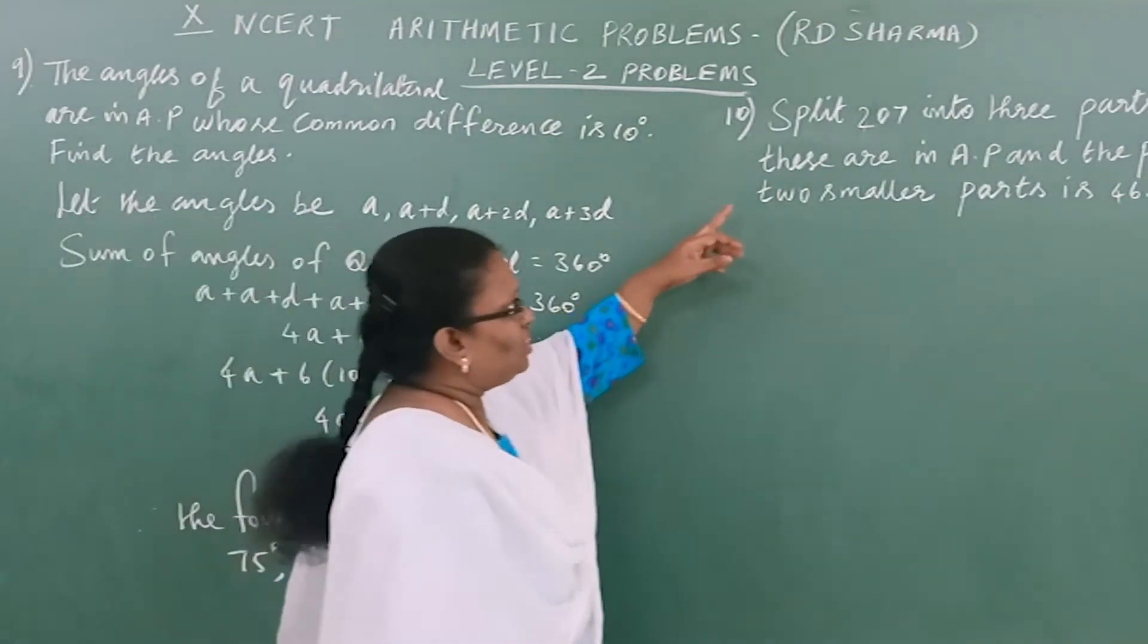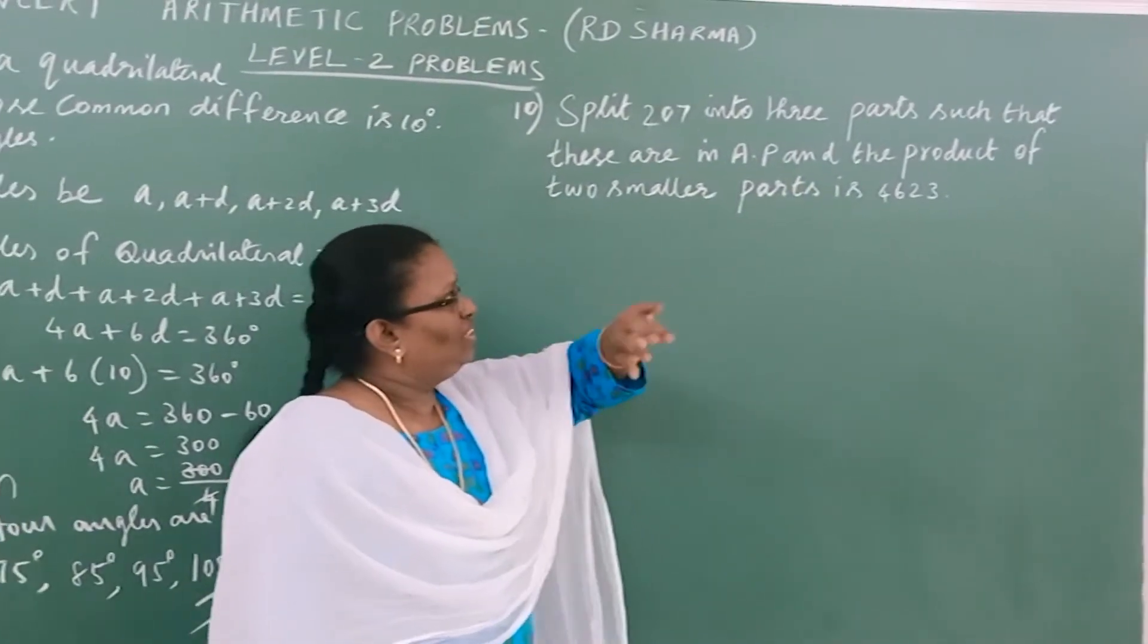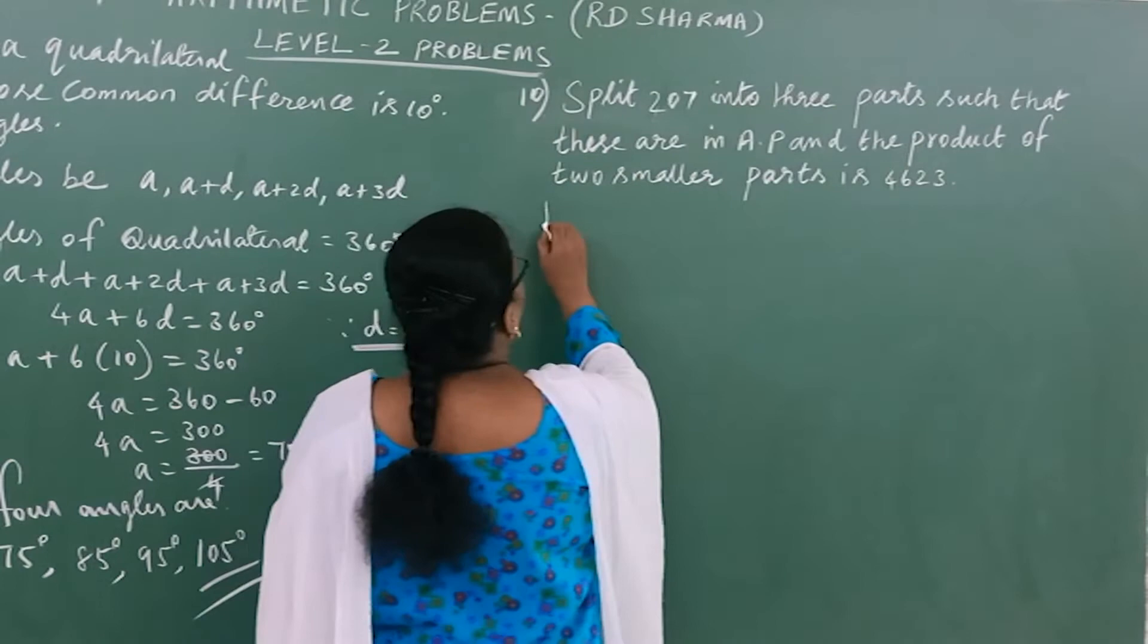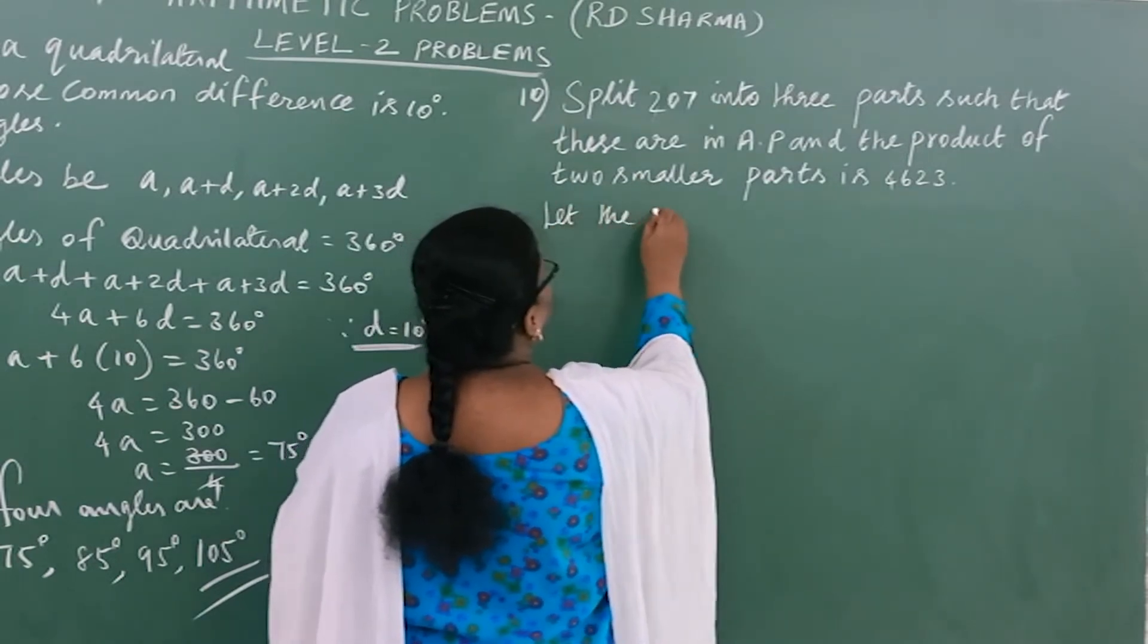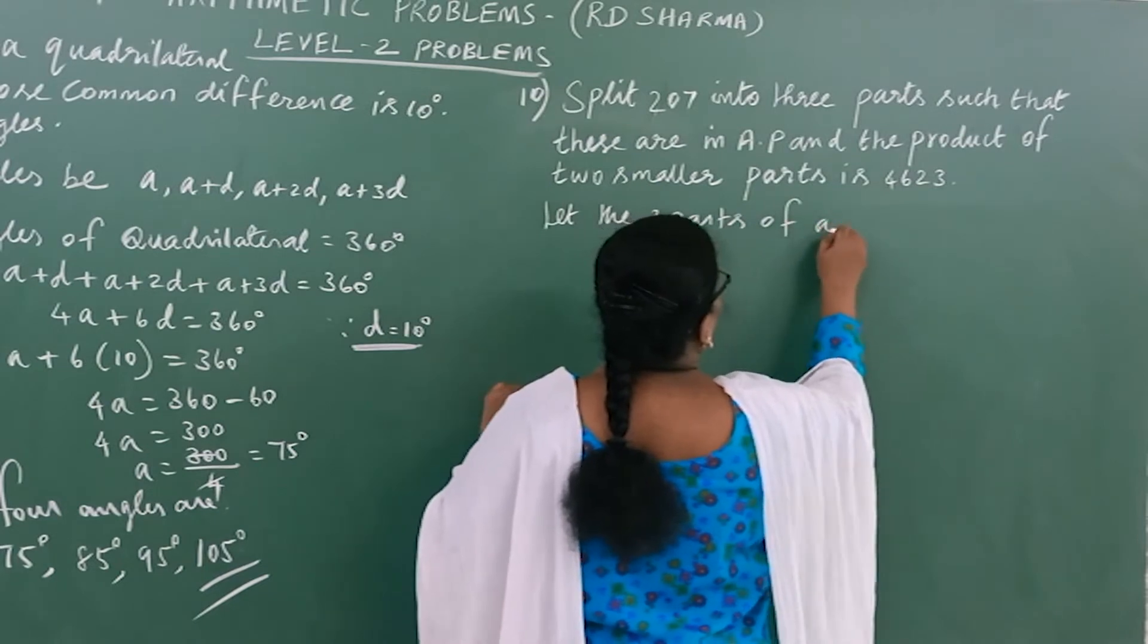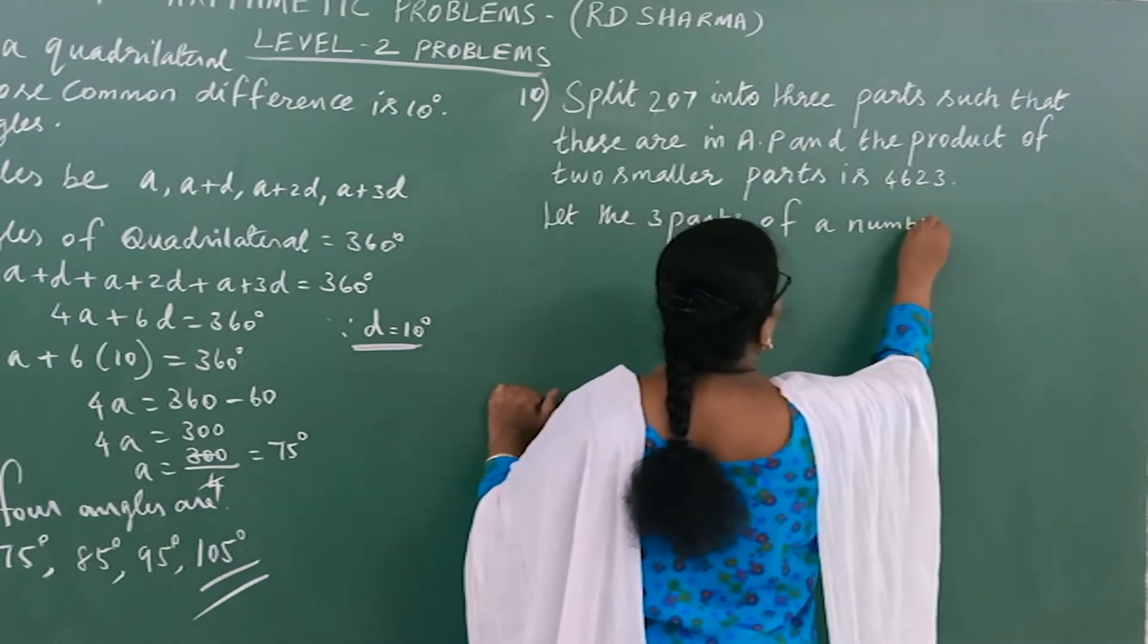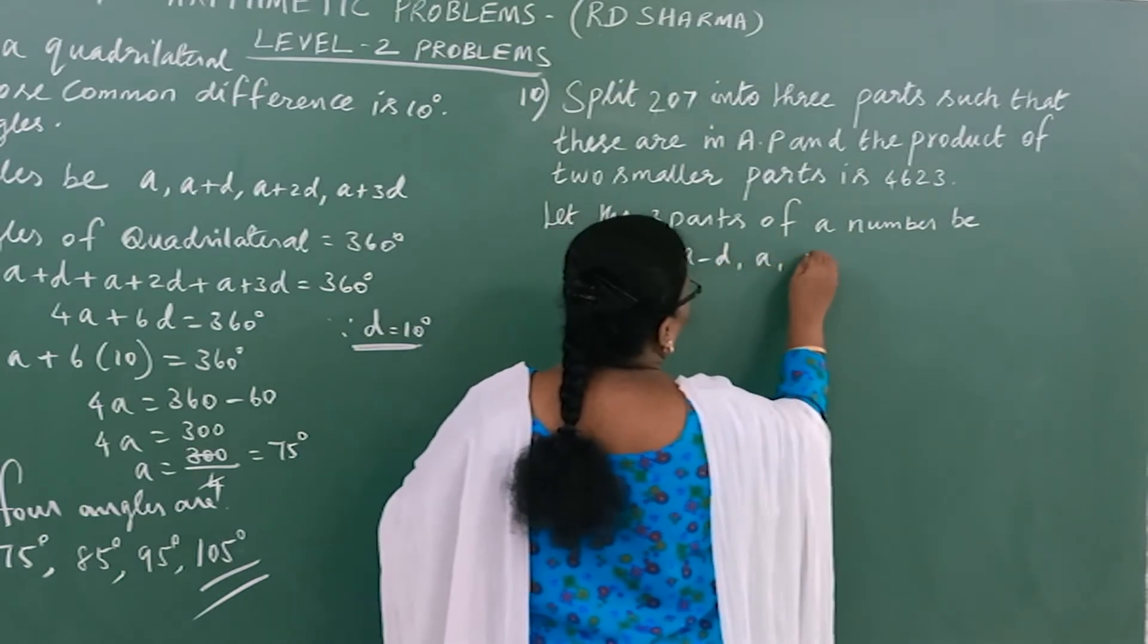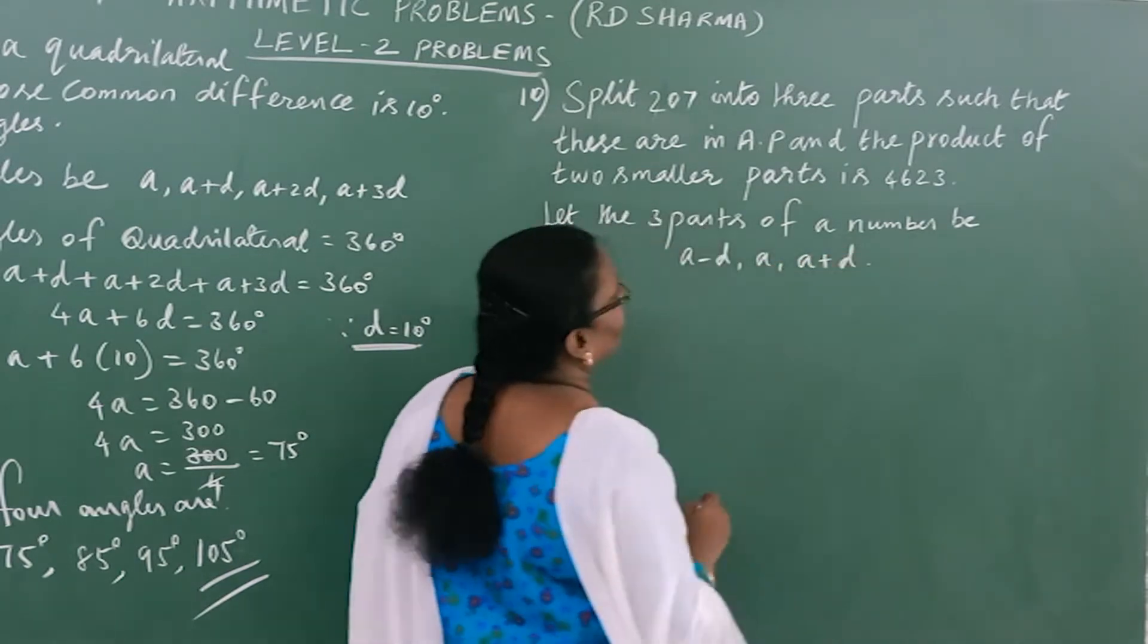Next problem: Split 207 into 3 parts such that these are in AP and the product of two smaller parts is 4623. Let the 3 parts of the number be A-D, A, and A+D.